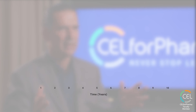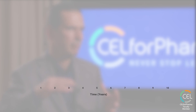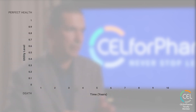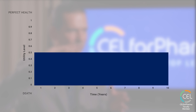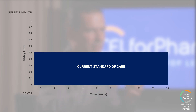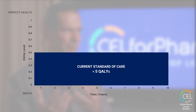Imagine a patient has a life expectancy of 10 years, but the quality of that life, expressed between 0 and 1 — where 1 is perfect health and 0 is death — is 0.5. If that patient lives 10 years at a quality of only 0.5, then we say this patient has 5 QALYs: 5 quality-adjusted life years.